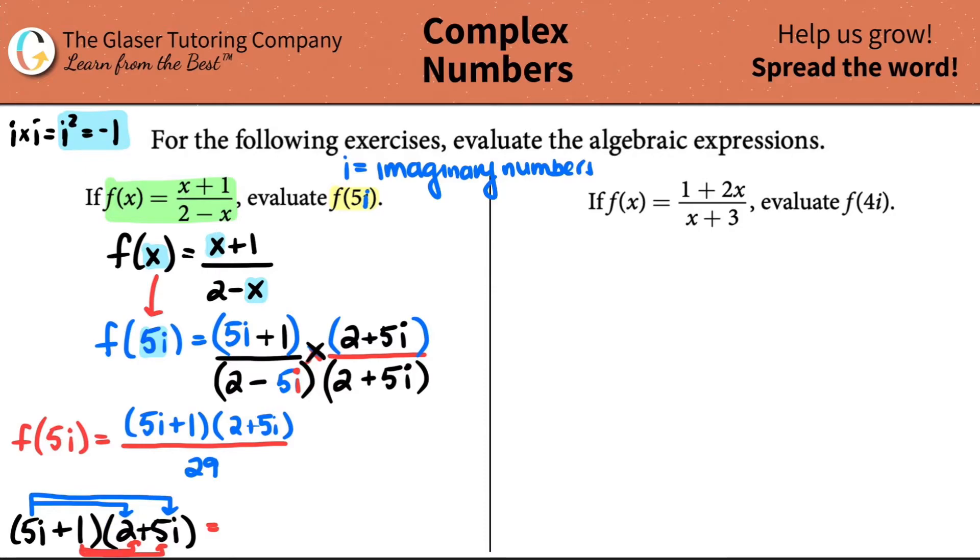So let's start with the first term. 5i times 2 is 10i. 5i times 5i is plus 25i squared. 1 times 2 is plus 2. 1 times 5i is plus 5i. Let's clean this up. I have a 10i plus a 5i, so I have a 15i. I also have a 25i squared and a 2.